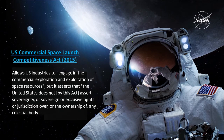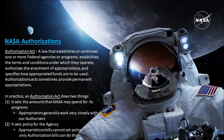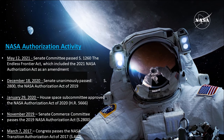NASA authorizations. An authorization act is a law that establishes or continues one or more federal agencies or programs, establishes the terms and conditions under which they operate, authorizes the enactment of appropriations, and specifies how appropriated funds are to be used. In practice, an authorization act does two things: it sets the amounts that NASA may spend for its programs, and it sets policy for the agency. Most recently, in May, the Senate committee passed the Endless Frontier Act, which included the 2021 NASA Authorization Act as an amendment. We are hopeful that bill will continue to move through the Hill and that we will have an agreed NASA Authorization Act this year.